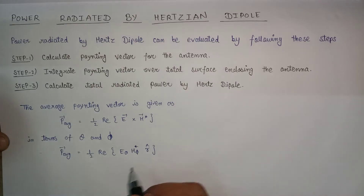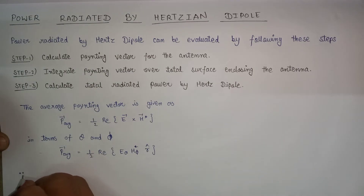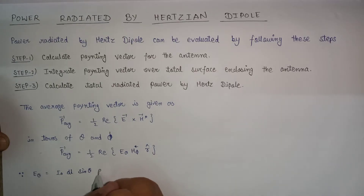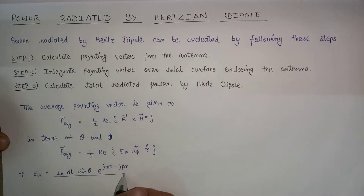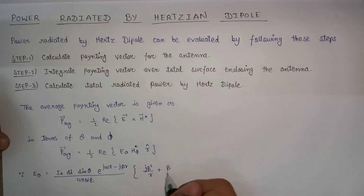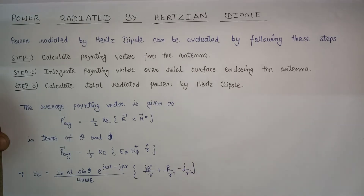We know that the electric field component for theta, E_theta, is equal to I-naught DL sin(theta) times e^(j*omega*t - j*beta*r) over (4*pi*omega*epsilon), multiplied by j*beta-squared over R, plus beta over R-squared, minus j over R-cubed.